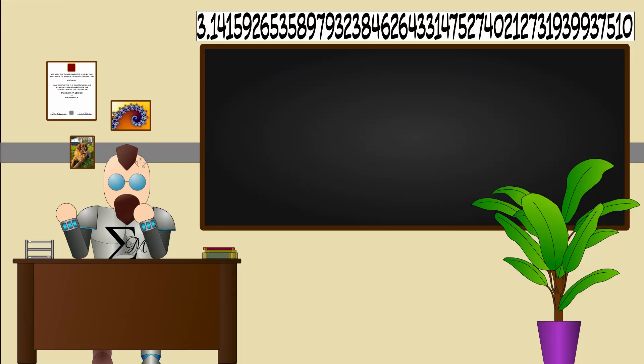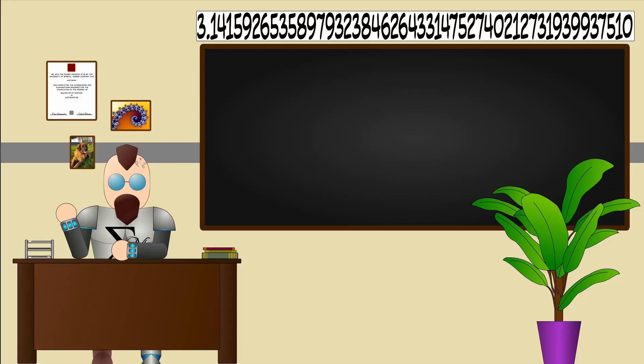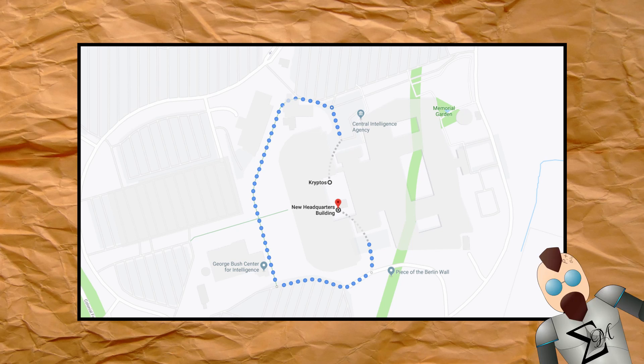However in 2006 the artist announced that he made an error and that an X after the word west should be inserted. This changed the final words from ID by Rose to X layer 2. The numbers listed in the message are actually GPS coordinates and lead to a location not far from Kryptos itself. Why these GPS coordinates? No one knows.